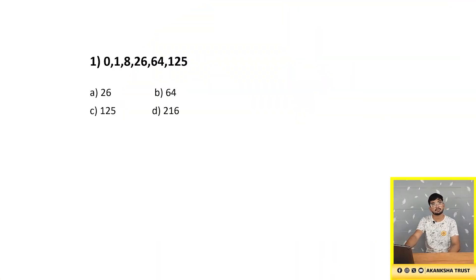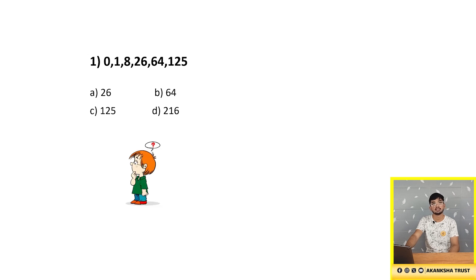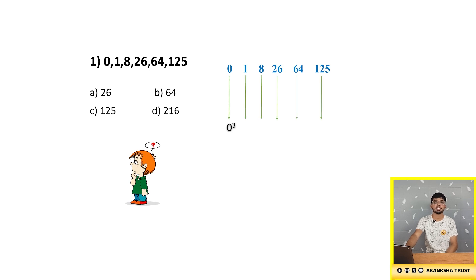We will solve the first problem: 0, 1, 8, 26, 64 and 125. We need to find the number which is wrong in the given sequence. Consider the numbers 0, 1, 8, 26, 64 and 125.